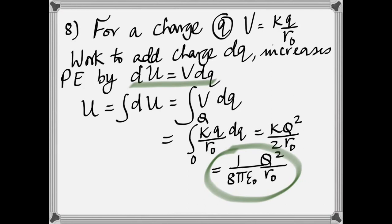In problem eight, you have to find the total electrostatic potential energy of a conducting sphere of radius R-naught that carries a total charge of Q. The work done to add DQ is given by the definition of potential energy as voltage times DQ. And so when you take the integral of V-DQ, you know that V is KQ by R-naught. You get KQ squared by 2R-naught. And substitute the value of K, which is 1 by 4 pi epsilon-naught. You get 1 by 8 pi epsilon-naught Q squared by R-naught.